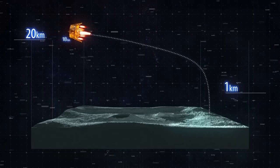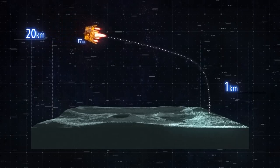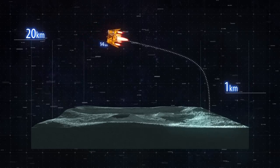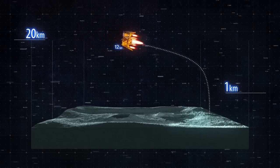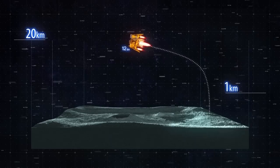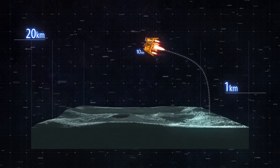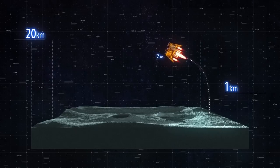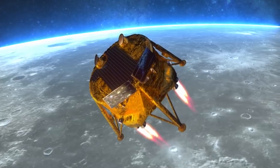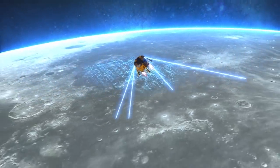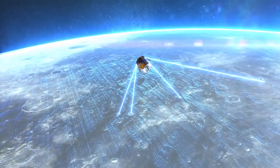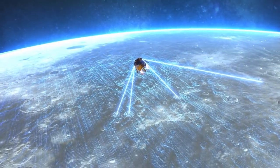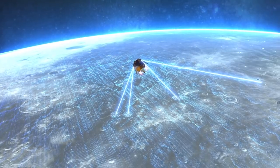If everything takes place according to plan, the spacecraft begins to decrease its orbital speed and thus reduce its altitude. This is achieved with the help of the spacecraft's engines and takes about 15 minutes. When the spacecraft reaches an altitude of 5 kilometers above the moon's surface, it measures its precise distance from the surface using a laser in preparation for its landing.